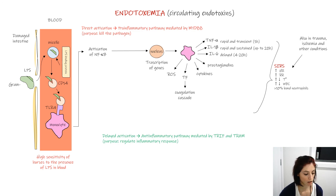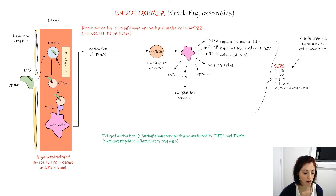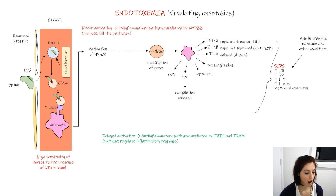In horses, LPS principally activates the first pathway, but in other species there is also a delayed activation that constitutes the anti-inflammatory pathway and is mediated by other adaptor proteins named TRIF and TRAM.